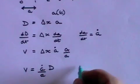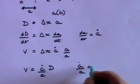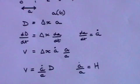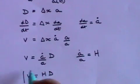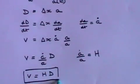And a dot over a is Hubble's constant H. So v equals HD. And that's the famous Hubble's equation.